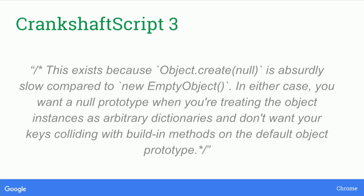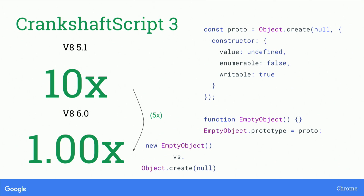There's another example from the Ember code base with a really long comment: 'This exists because Object.create(null) is absurdly slow compared to new empty object.' You want a null prototype when treating object instances as arbitrary dictionaries and you don't want keys colliding with built-in methods on the default object prototype. So Ember has this special EmptyObject that creates an object with a null prototype to avoid using Object.create(null), which would be the idiomatic JavaScript way. In Crankshaft, you'd have to do it this way because it was about 10 times faster in a hot loop. In V8 6.0, this makes literally no difference. Now you at least have the choice between the semantic flavor of the wrapper or the more readable Object.create(null).